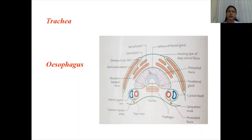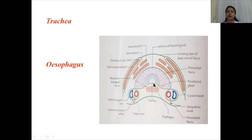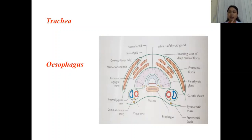Two other important deep structures of the neck are the trachea and the esophagus. The trachea has a cervical part and a thoracic part. It is made up of 16 to 20 cartilaginous rings; posteriorly the rings are deficient and bridged by a smooth muscle called trachealis, because the esophagus lies immediately posterior to the trachea, allowing distension during passage of food. The trachea begins as a continuation of the larynx from the lower border of C6 up to the lower border of T4.